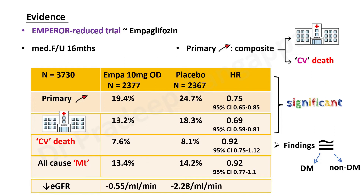Both DAPA-HF and EMPEROR-Reduced are landmark trials where good clinical endpoint effects were found even in non-diabetic patients. Although these are diabetic drugs, a similar benefit was seen in non-diabetic patients — that was the high point of these two trials. Because of such positive findings, this has been incorporated into the 2022 guidelines: these drugs should be considered even in non-diabetic patients with heart failure to achieve good improvement in clinical endpoints.